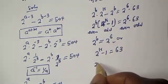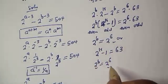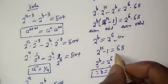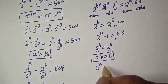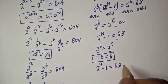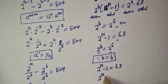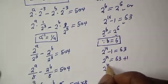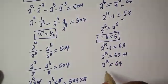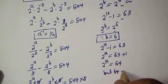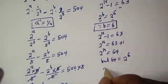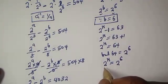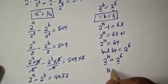From here, since 2 raised to power b equals 2 raised to power 6 and they have the same base, therefore b equals 6. Also, from 2 raised to power k minus 1 equals 63, we get 2 raised to power k equals 64. But 64 equals 2 raised to power 6, so 2 raised to power k equals 2 raised to power 6. Since they have the same base, k equals 6.